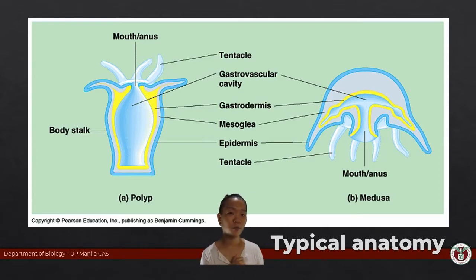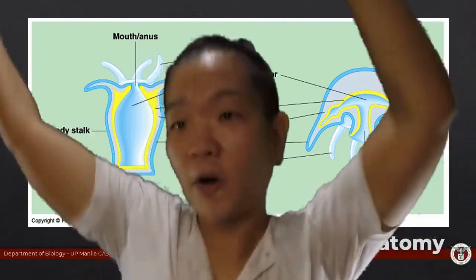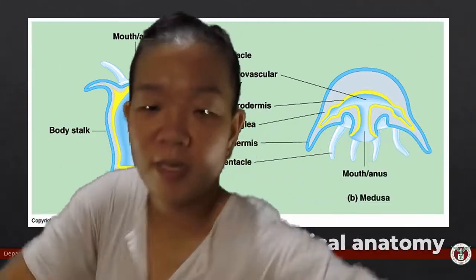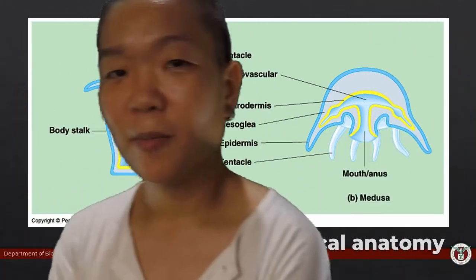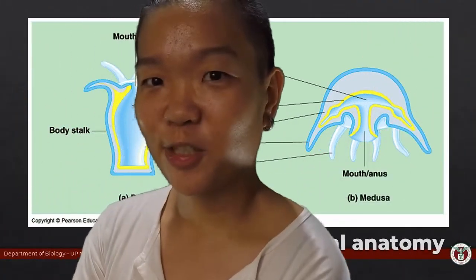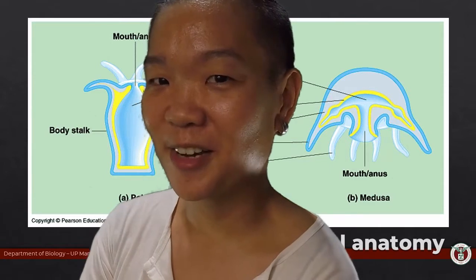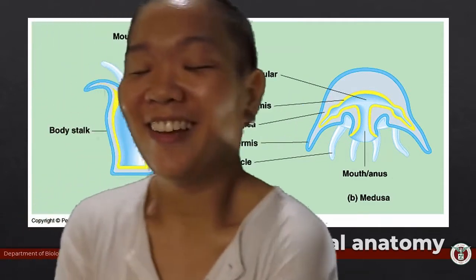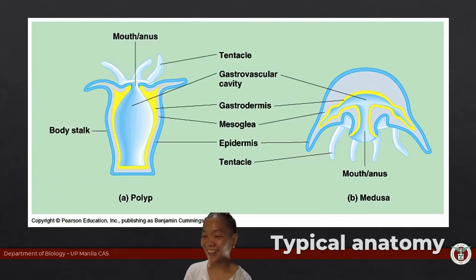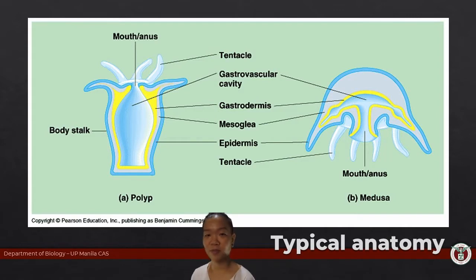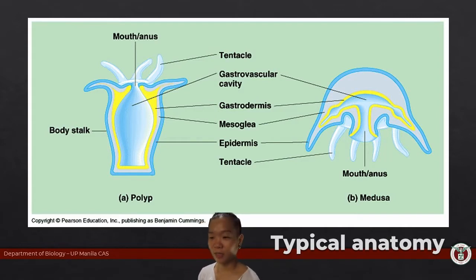One good way to remember this is to think of it as a dance: polyp, medusa, with mouth/anus orientation changing. And yes, it is both a mouth and an anus — that multipurpose hole. It's a gastrovascular cavity.